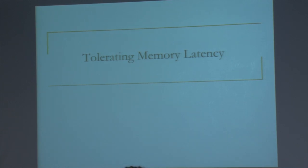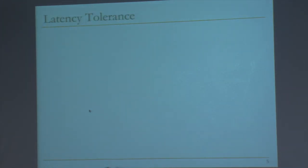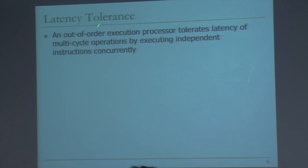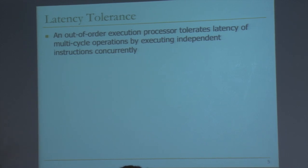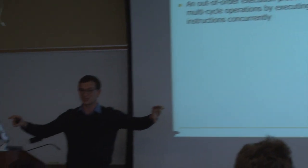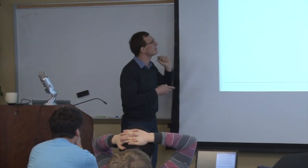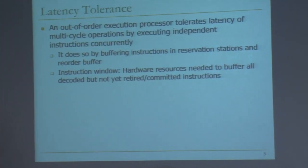We're going to talk about tolerating the long memory latencies. Memory latency is no different from any other latency, except it's long. We've already seen one method of latency tolerance — actually multiple methods. Out-of-order execution was one method for tolerating latency: you tolerate latency of multi-cycle operations by executing independent instructions concurrently. While you're waiting for the result of one operation, some other independent instruction can execute. That's how you tolerate latencies — you're overlapping multiple instruction execution latencies — and memory latency is one of them.